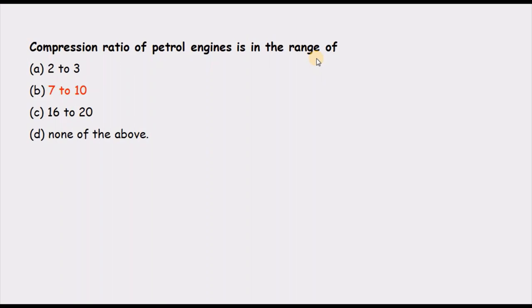The compression ratio of a petrol engine is? The amount of compression required in an SI engine is smaller, ranging between 7 to 10. If the compression ratio exceeds 10 in an SI engine, knocking starts — so higher values are avoided. The value of 16 to 20 corresponds to a diesel engine. So the correct answer is 7 to 10.